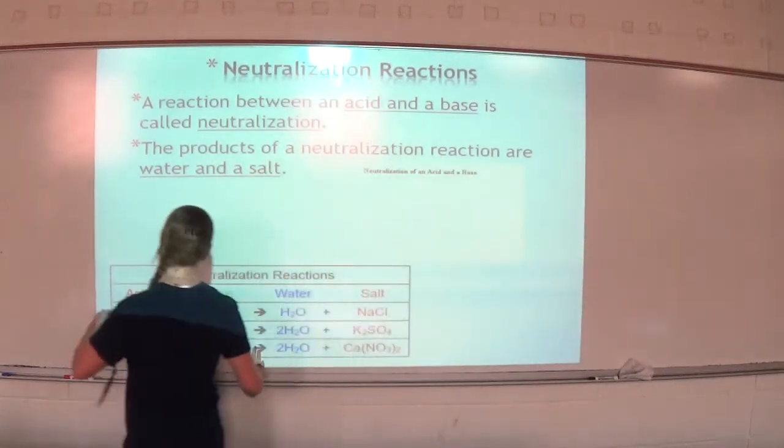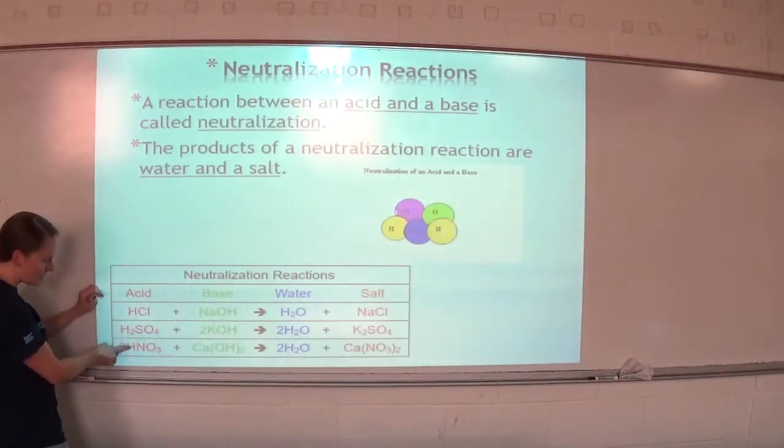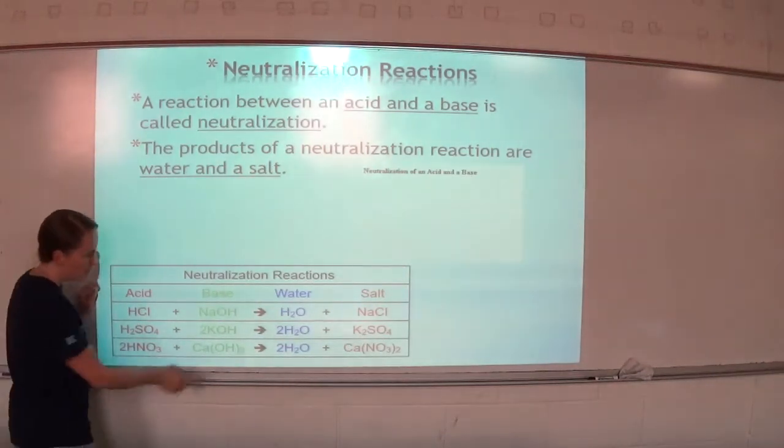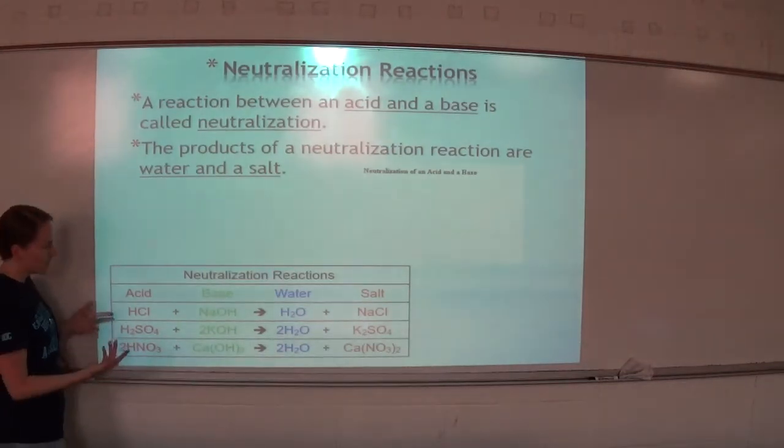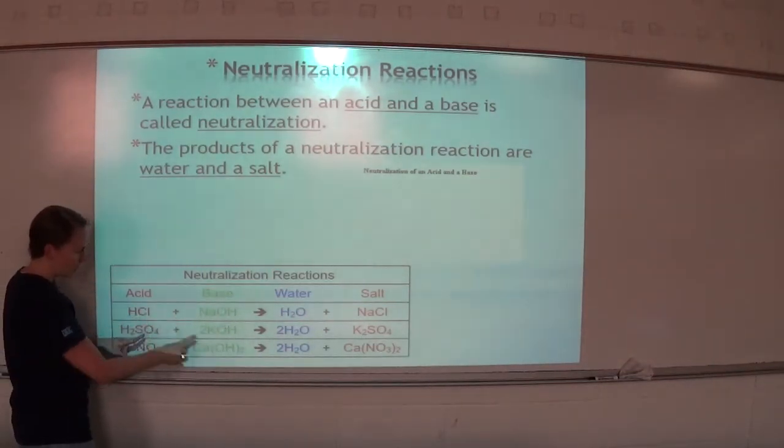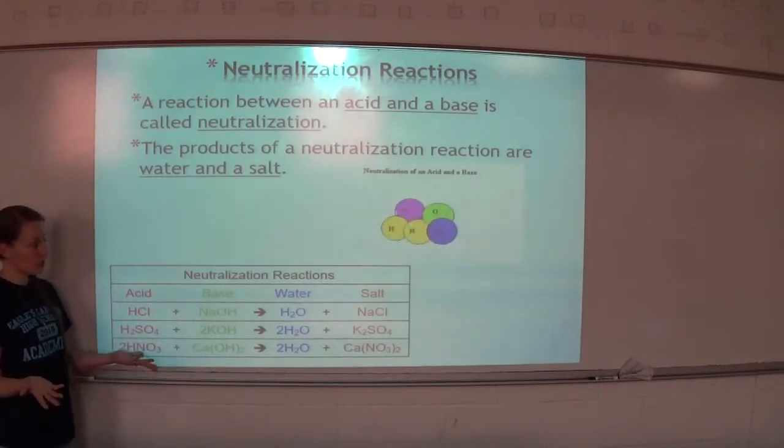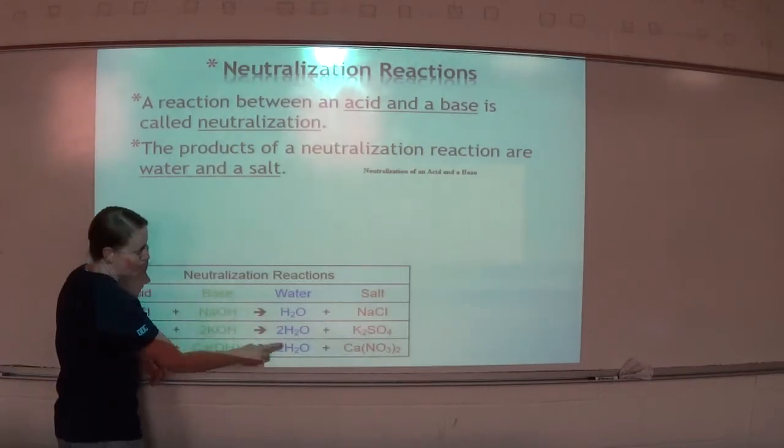Here are three examples. We have our acids. Acids usually start with H+. We have our bases. They usually end in OH-. And so that H+ and those OH- ions, they'll bond to make water, which is H2O. We make water in all of them.